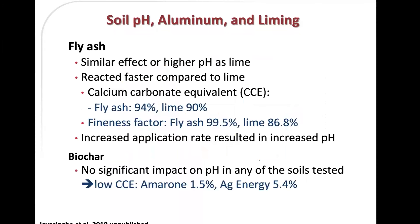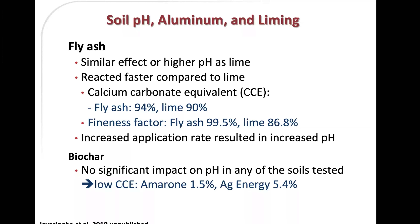In these microplot studies, we saw a similar effect of fly ash as lime. Some differences are due to lime sources and the lime value of the fly ash — fly ash reacted faster compared to lime. It has a calcium carbonate equivalent similar to lime, and a greater fineness factor, which may have also contributed to its faster reaction. In summary, increasing fly ash application rate increased pH. Biochar, on the other hand, had no significant impact on pH in any of the soils tested.